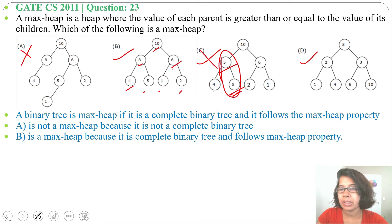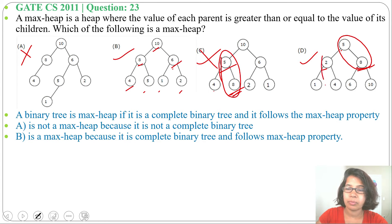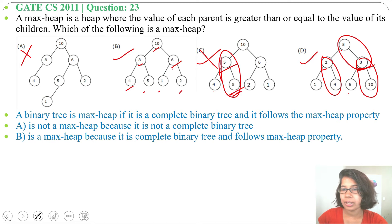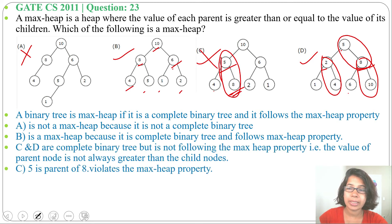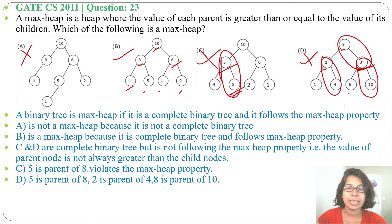Option D satisfies the shape property — it is a complete binary tree. Checking parental dominance: 5 is greater than 2 but not greater than 8; 2 is greater than 1 but not 4; 8 is greater than 6 but not 10. There are three pairs where the parent value is not greater than its child, so it does not satisfy the max-heap property and is not a max-heap.